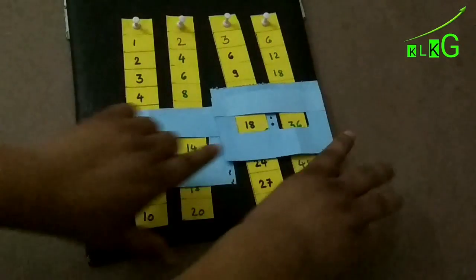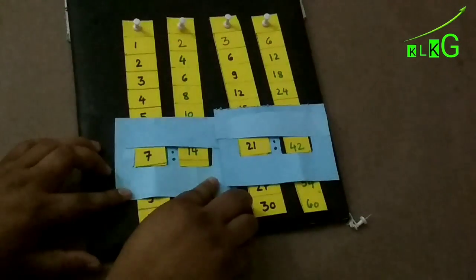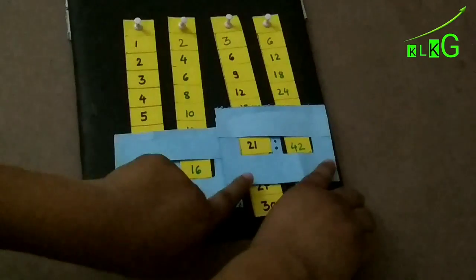7 is to 14 is equal to 21 is to 42. And this way our working model will work, and we can change the strips accordingly.